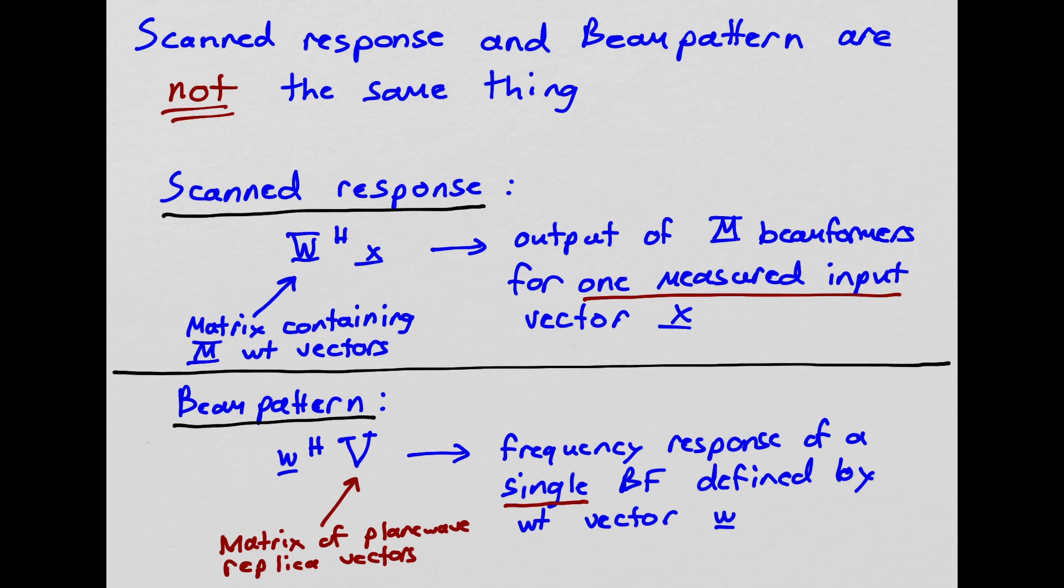So these are two different things, and I'm just calling your attention to that because it's a point of confusion. The scanned response is computed using a measured input vector, and you define the output of a bunch of different beamformers for that single measured input vector. The beam pattern is the frequency response of a single beamformer defined by a single weight vector W.